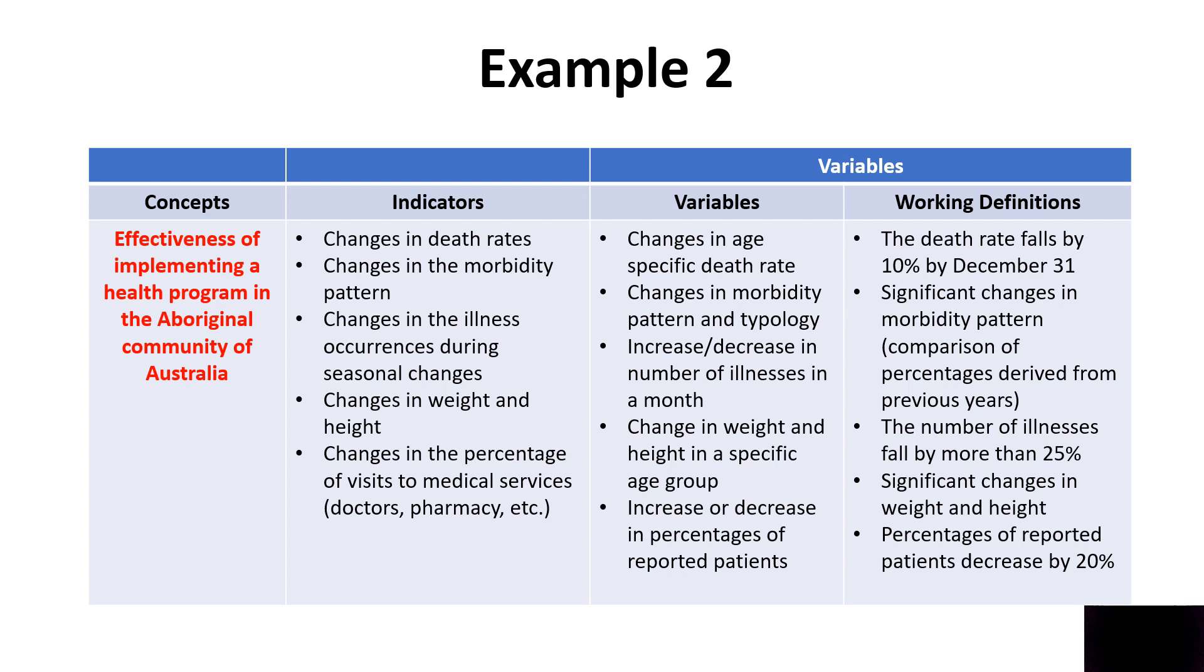The indicators could be change in the rate at which people are dying, change in the morbidity pattern, change in the illness occurrences during especially seasonal changes, or changes in the weight and height of the community. You can target a particular age in the community, for example, young adults or infants or senior citizens, or you can also use change in the percentage of visits to medical services as an indicator. If there is a reduction in the number of people visiting the doctors or pharmacy, then you can develop a correlation there between the implementation of the health program and the effectiveness.